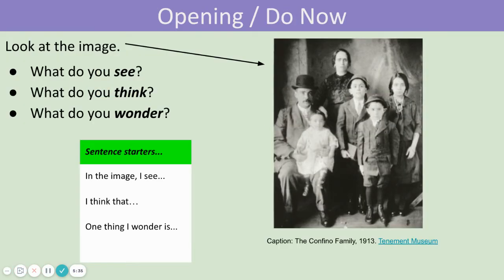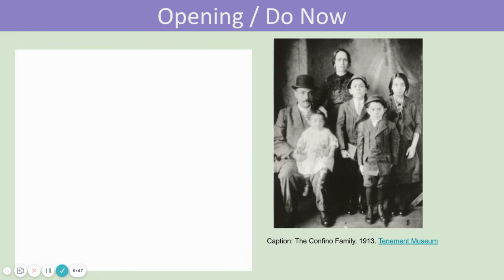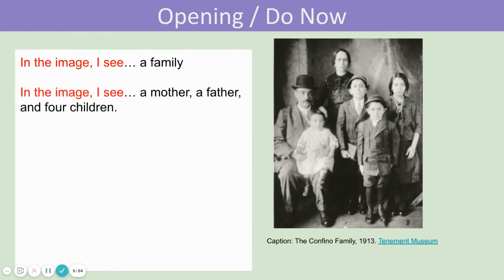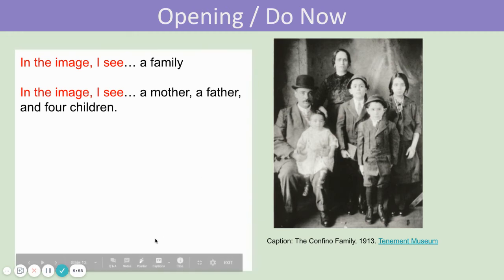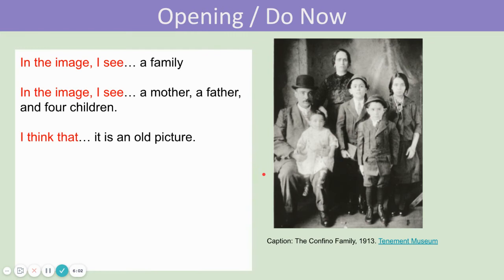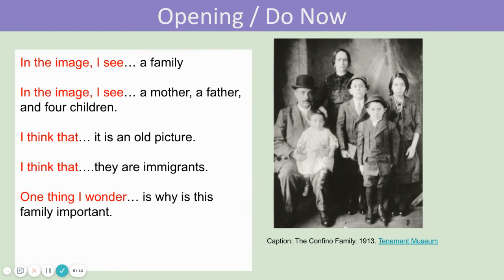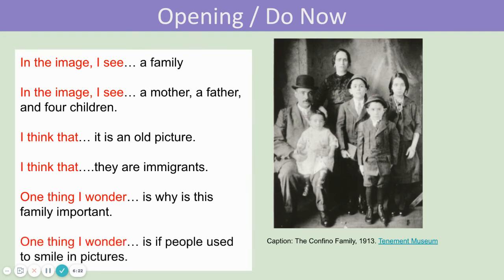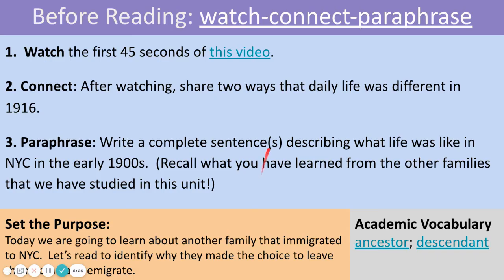Let's look at this image of the Confino family. What do you see? What do you think? What do you wonder? You might say: in the image I see a family — a mother, a father, and four children. You might say: I think that it is an old picture. You might say: I think that they are immigrants. You might wonder: why is this family important? Or: did people used to smile in pictures? You can open up the short video clip by following the link and pause my video now.